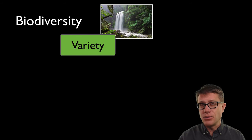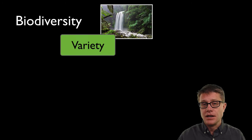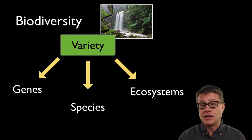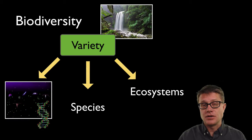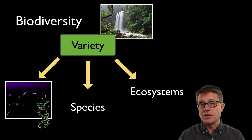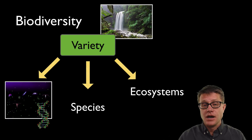If we define what it is, it is simply variety — variety at the genetic level, at the species level, and at the ecosystems. And so those genes that organisms have, once the organism is gone or the gene is gone, it is gone forever. It is extinct.